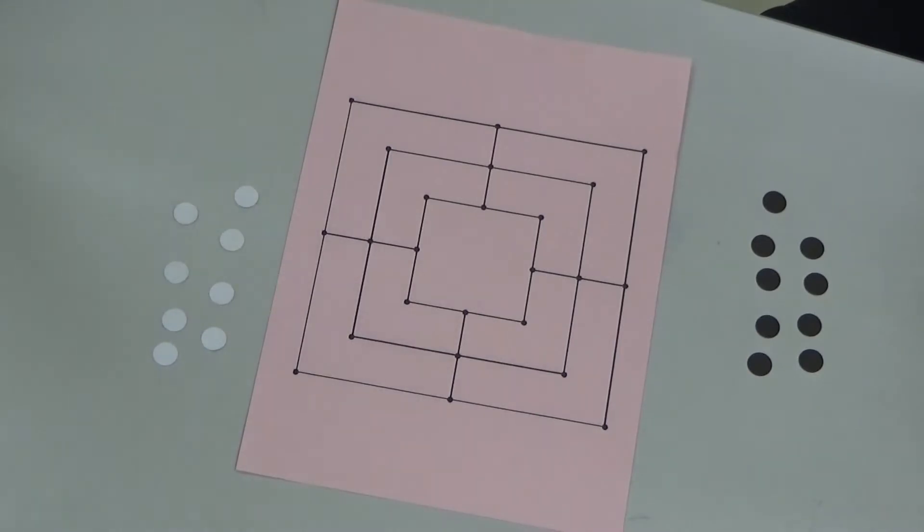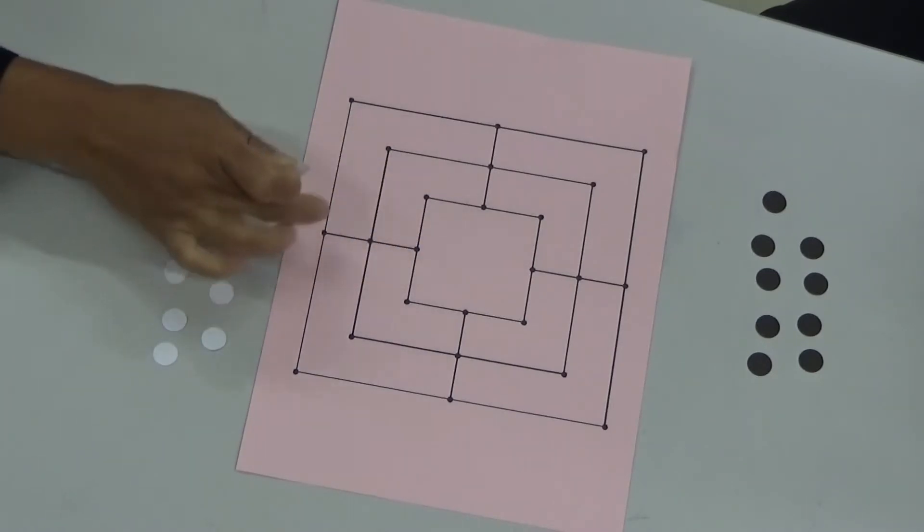Now, the goal is to make a row of three pieces along a line. Okay, so can you show an example, please?